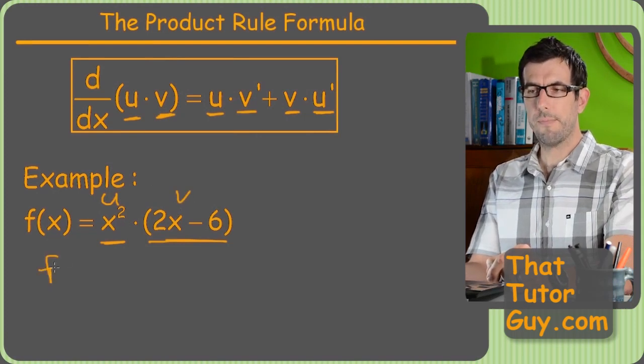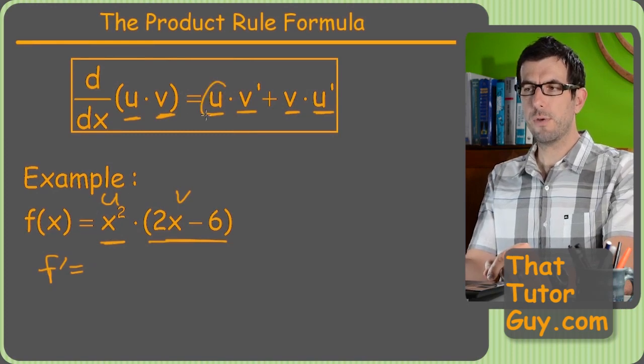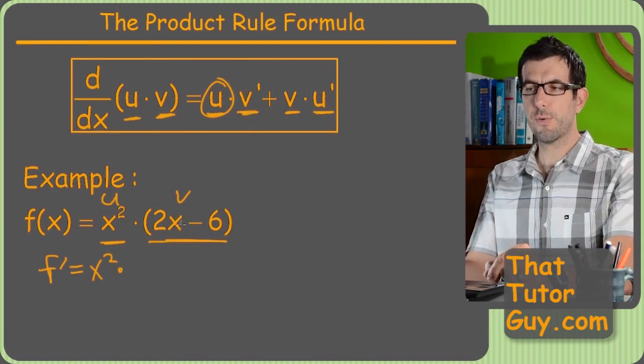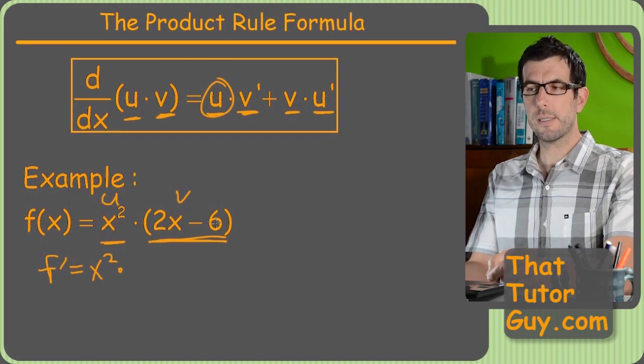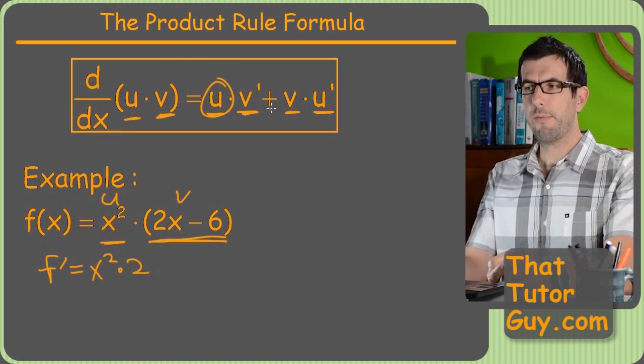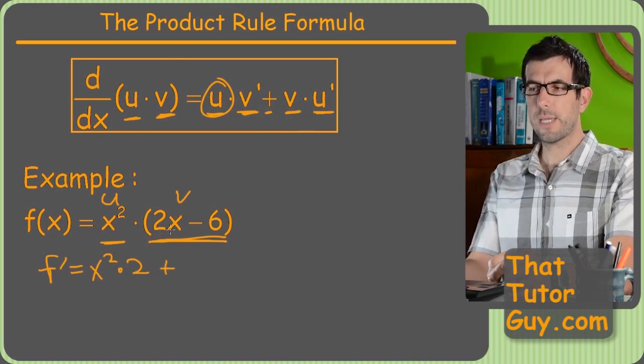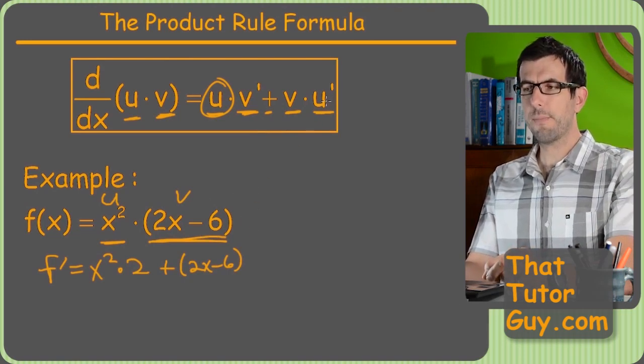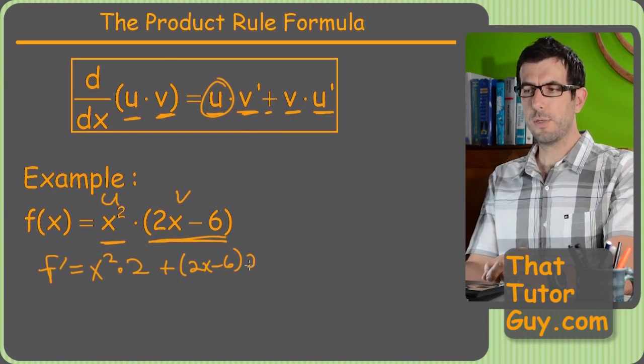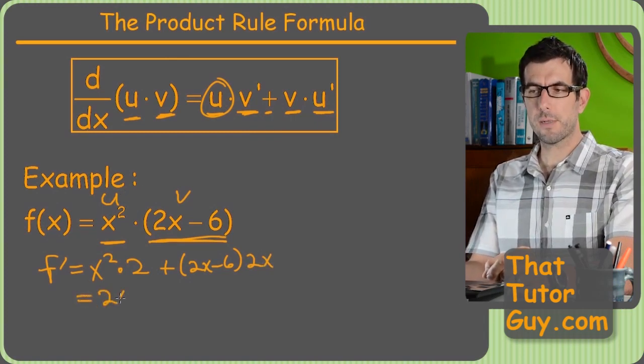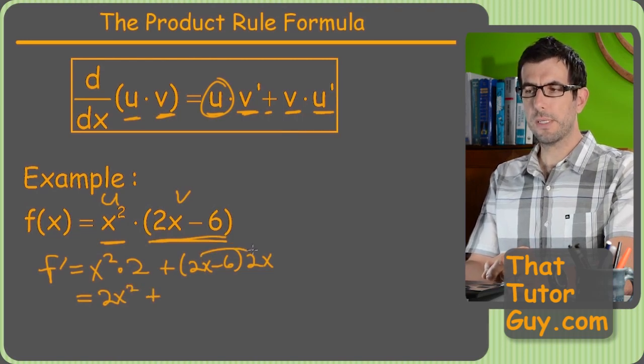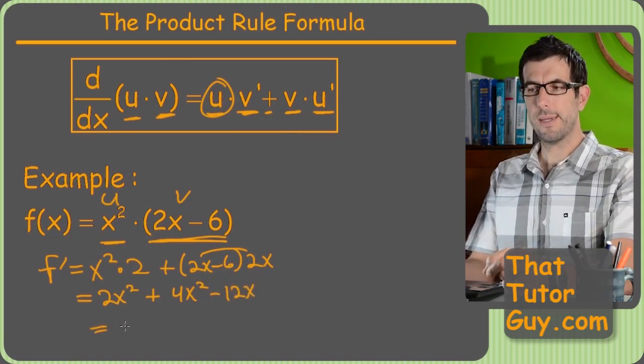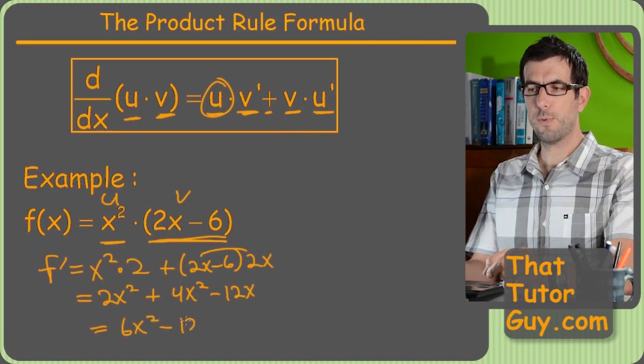So, I might label this one u and this one v. So the derivative, f prime, is going to equal, let's see, so first I have u. My u is just x squared. Then I'm going to multiply that by v prime. So that's the derivative of this chunk. Derivative of 2x minus 6, the 6 goes away and I've just got a 2. Then I have a plus sign. Then I've got a v, which is the second one, and put that in parentheses always when you're subbing in on these. And then u prime is derivative, so that's the derivative of this first term, which is x squared. So that's the 2x.